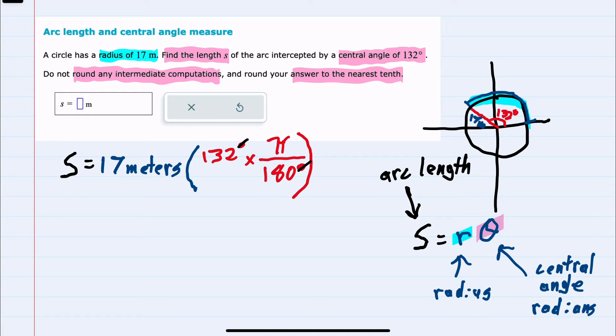We can put all of this into a calculator, including pi. Our units will be now meters, which makes sense for the length of an arc to be in meters. And in my calculator, I will just put 17 times 132 times pi divided by 180.